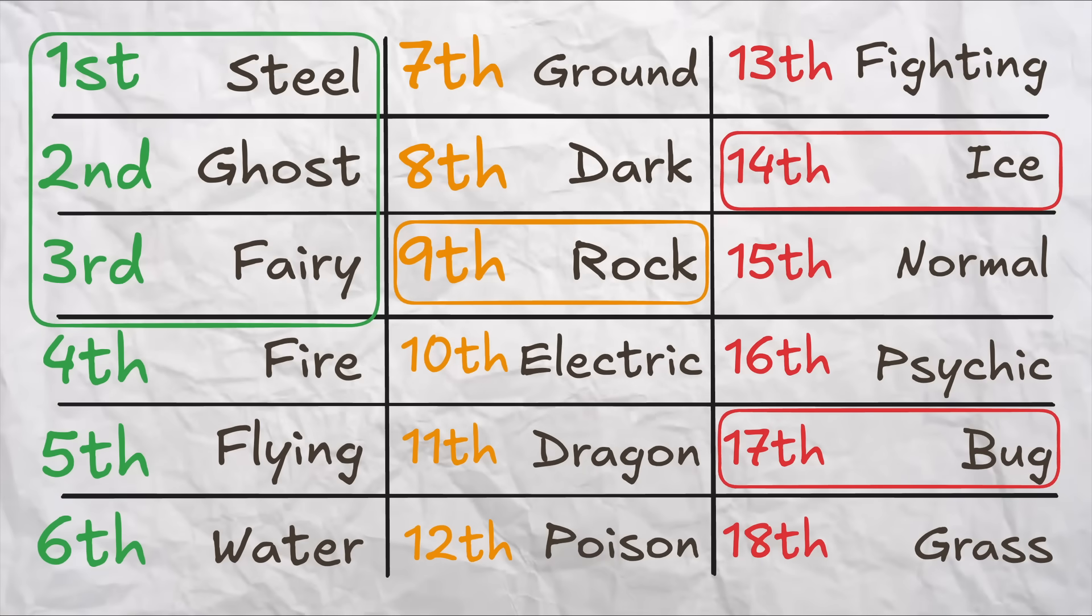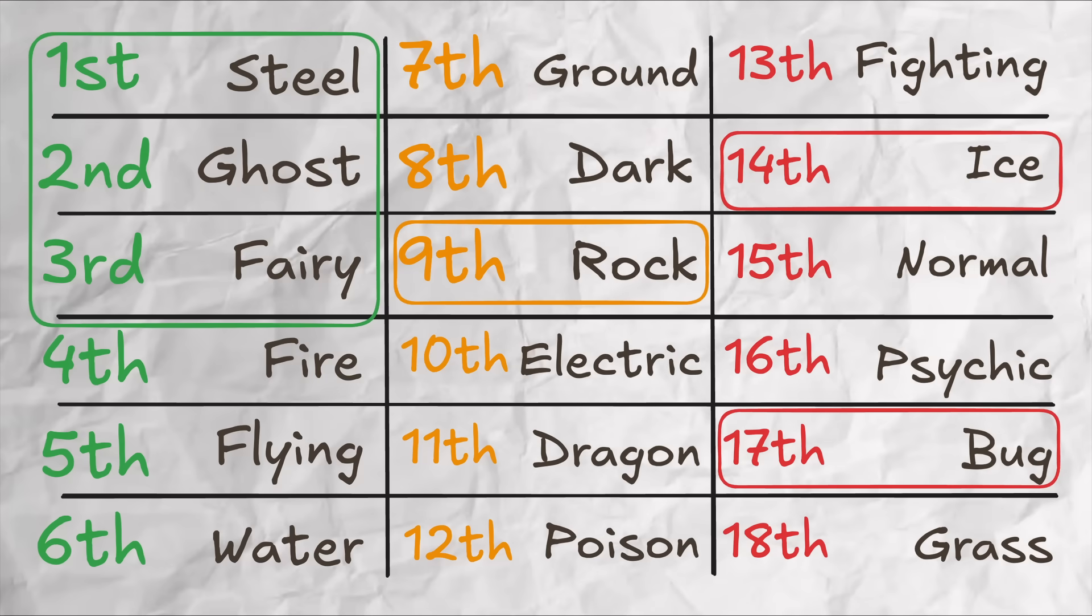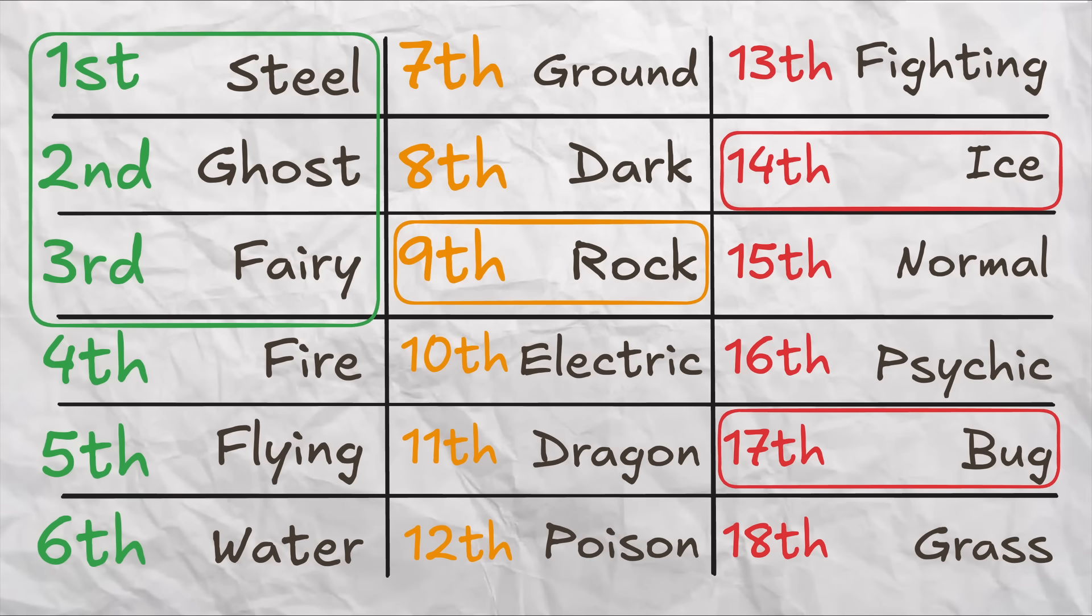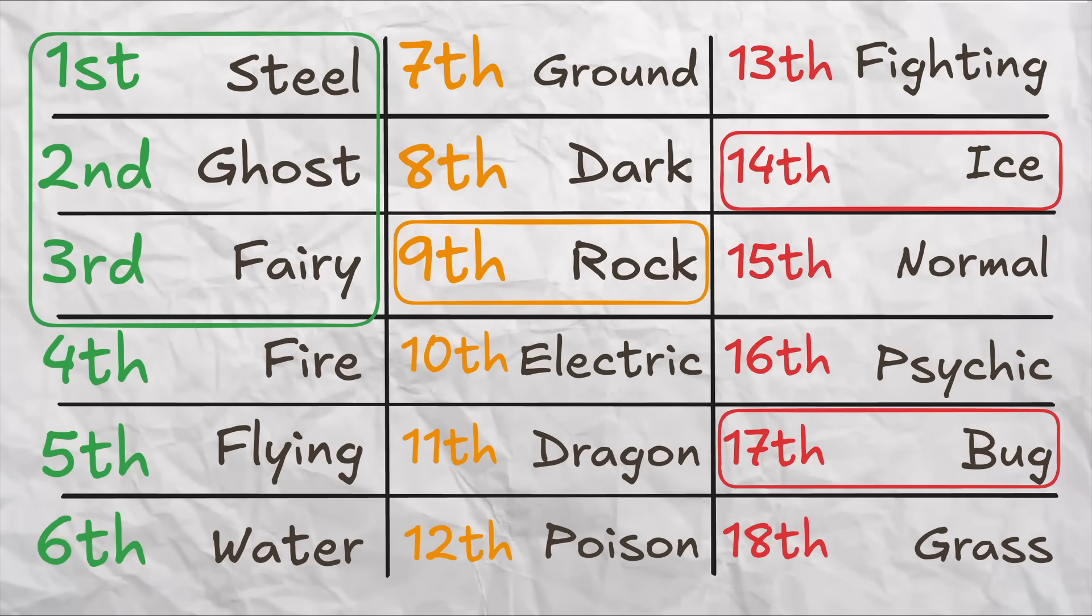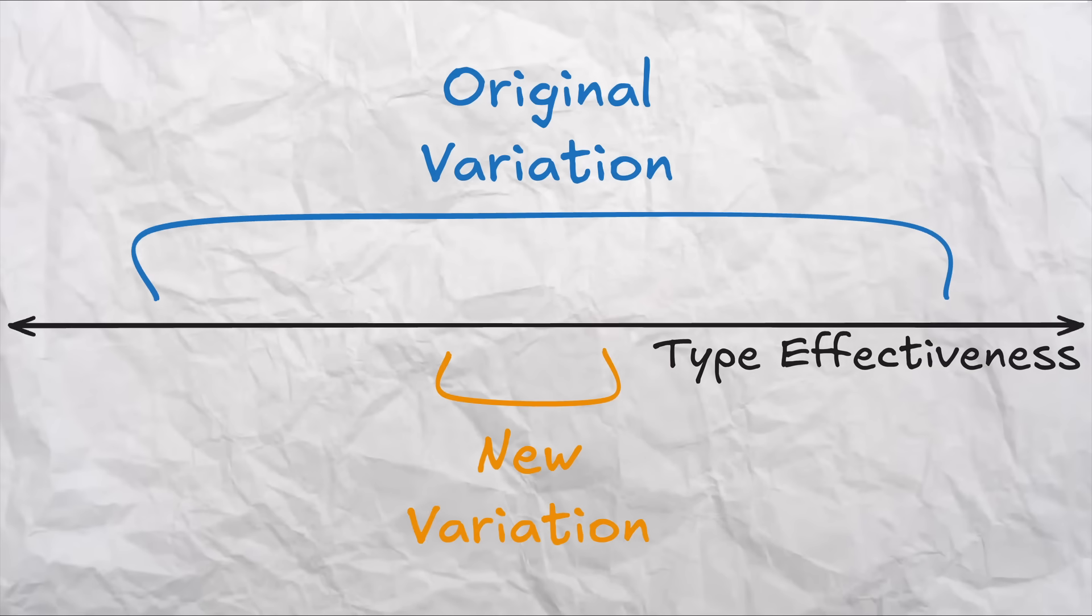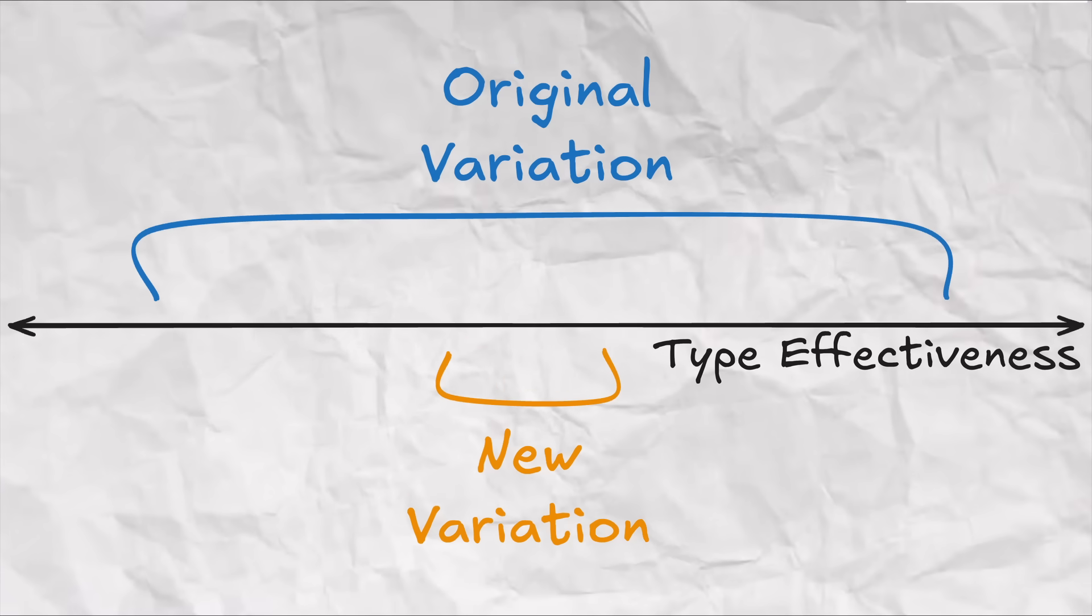Now we can appeal to the same approach as before, where we think about the potential offensive and defensive relationships of a new 19th type and see what keeps the game balanced. We're again going to make a few changes here based on y'all's comments from the last video. First, I think there was a really good argument that some folks made that our goal should not be to keep all of the types as balanced to each other as possible.